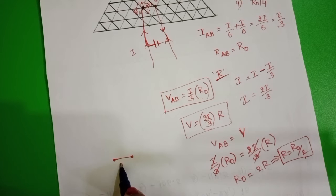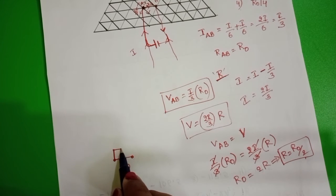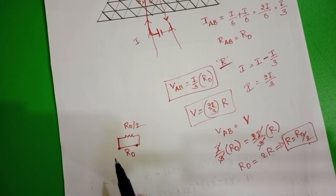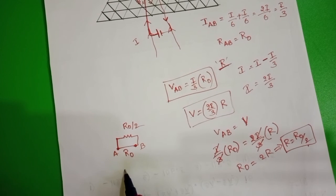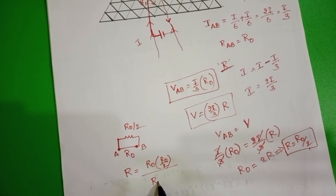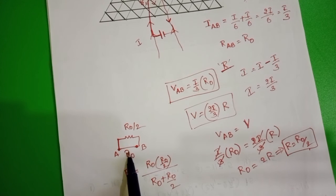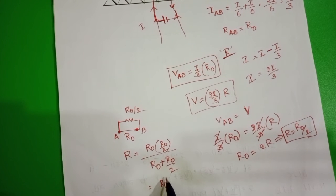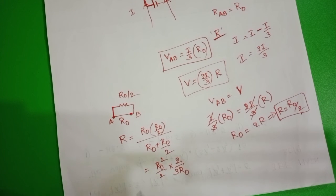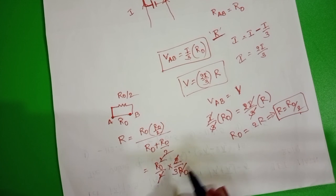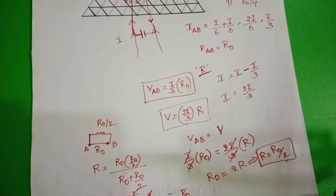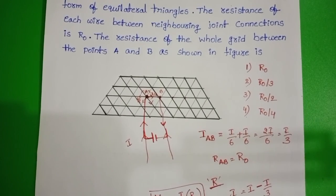The resistance in between A and B is R0, and the resistance of the remaining circuit is R0/2. These two are in parallel, so the total resistance of the grid circuit between points A and B is R = (R0 × R0/2) / (R0 + R0/2) = (R0²/2) × (2/3R0) = R0/3. Therefore, the equivalent resistance of the given grid circuit between points A and B is R0/3.